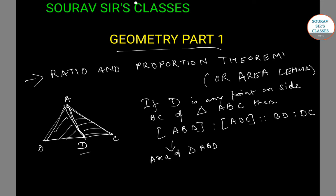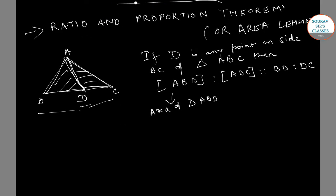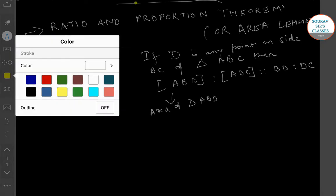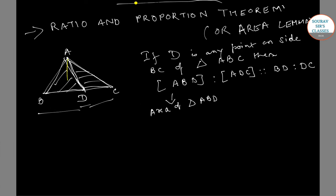Now let us prove this theorem. For this, we have to construct a perpendicular AE to BC. If AE is perpendicular to BC, then AE is the height of triangle ABC, and it is also the height of both triangle ABD and triangle ADC.